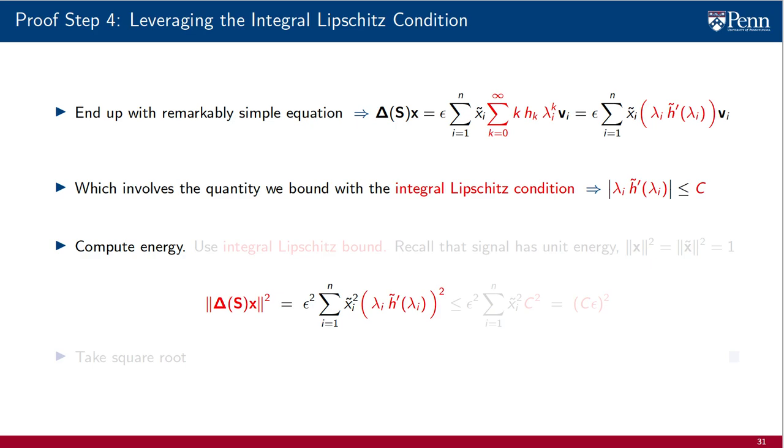We can do that if we compute the energy of ΔS times x, so that we can use the integral Lipschitz bound on the square that appears. Together with the fact that the input signal x has unit energy, which is preserved when we move to the frequency domain, this leads to a bound of the form Cε². We now take square root on both sides to complete the proof.